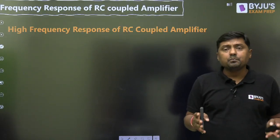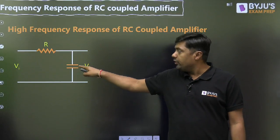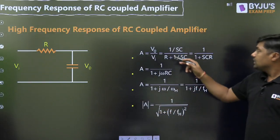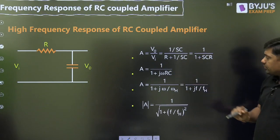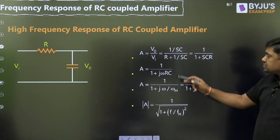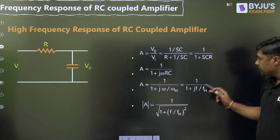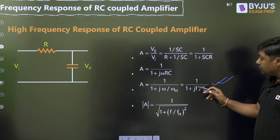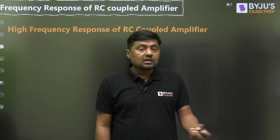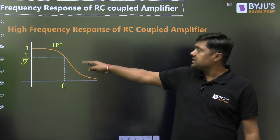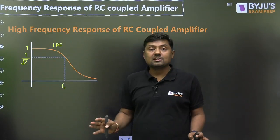At high frequency, BJT behaves like a low pass filter. The standard diagram for a low pass filter RC: Z2 becomes 1/SC and Z1 remains R. V0/Vi equals (1/SC) divided by (R plus 1/SC). Replacing S with jω, RC equals 1/ωH, so ωH equals 1/RC. This is called the higher 3dB cutoff frequency. 2π cancels and you get the standard formula for the low pass filter. When we are increasing the frequency, the gain will reduce. At cutoff frequency FH, the gain becomes 1/√2 of maximum gain. FH equals 1/(2πRC).